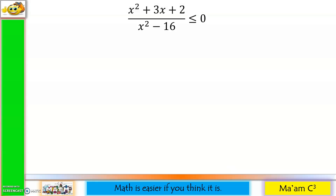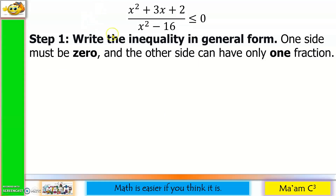Solve the rational inequality: x squared plus 3x plus 2, all over x squared minus 16, is less than or equal to 0. Step 1: Write the inequality in general form. One side must be 0 — check. And the other side can have only one fraction — check.